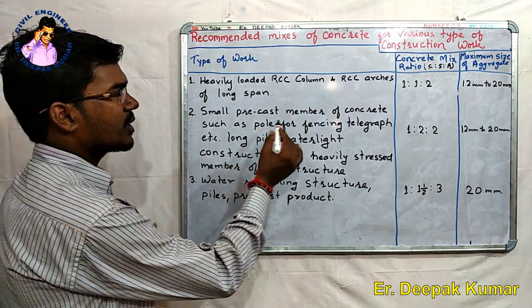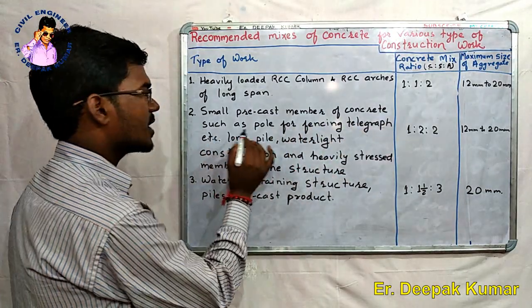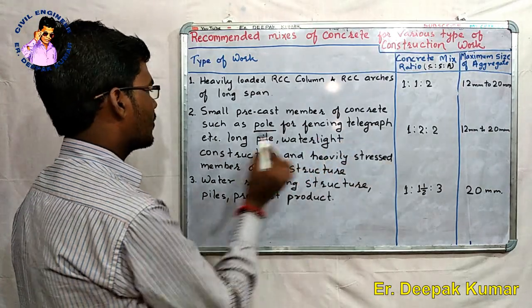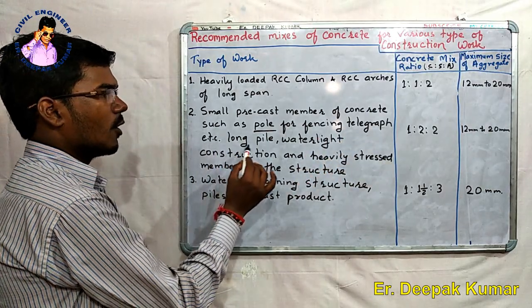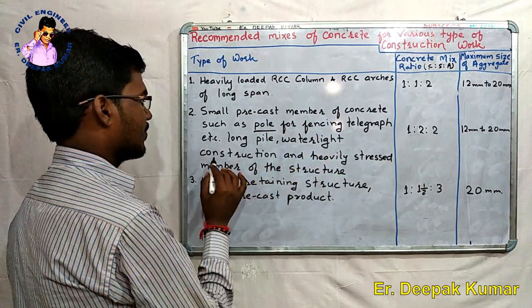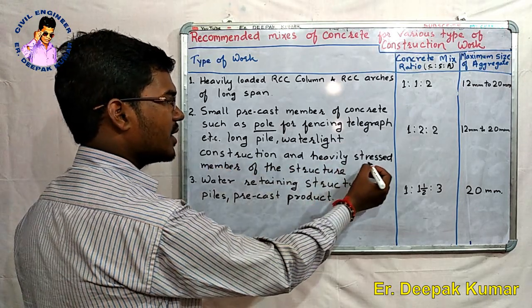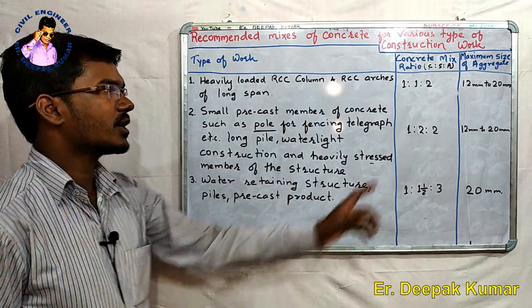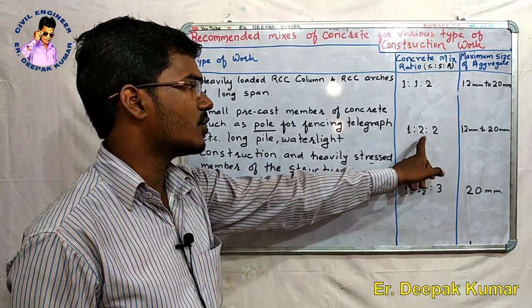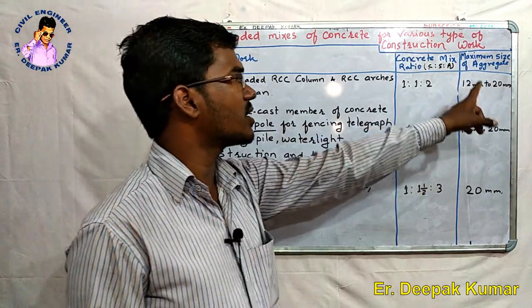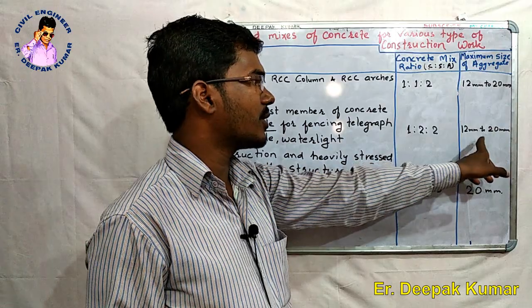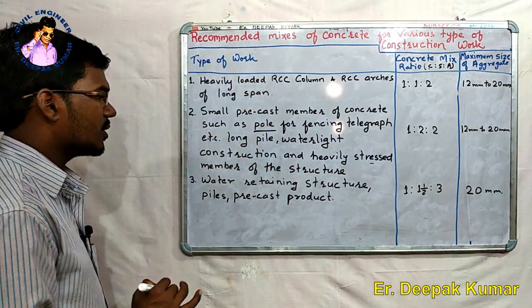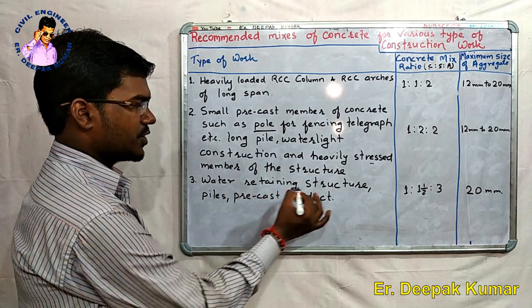The second type covers small precast members such as poles for fencing, telegraph poles, long piles, water and light construction, and heavily stressed structural members. The concrete mix ratio for this is 1:2:2, and the maximum size of aggregate is 12mm to 20mm.